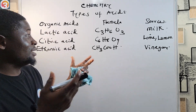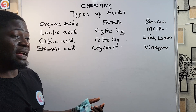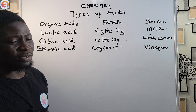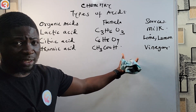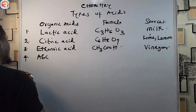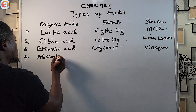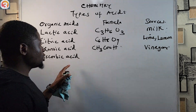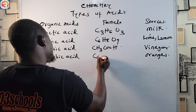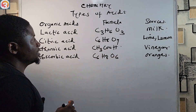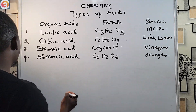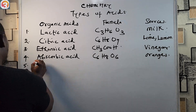Make sure you know the sources of these acids — exam questions may ask which source a particular acid comes from. Number four: ascorbic acid, gotten from oranges, with the chemical formula C₆H₈O₆.